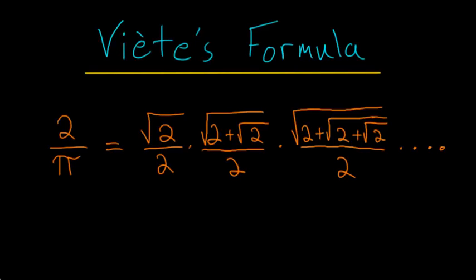This formula for pi was first published in the year 1593 by the French mathematician François Viète. As you can see, 2 divided by pi is equal to this infinite product of nested radicals.